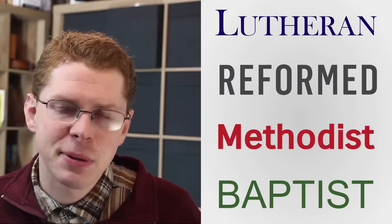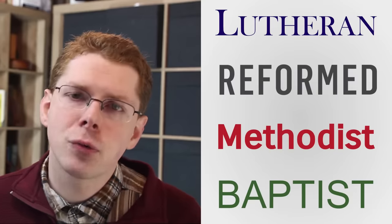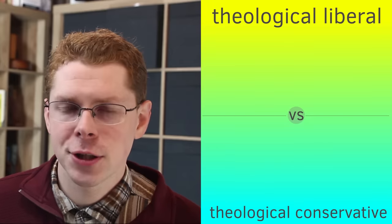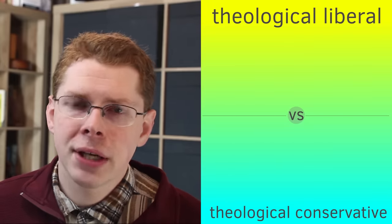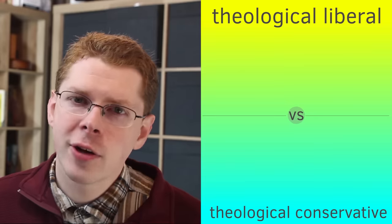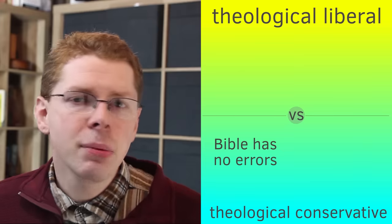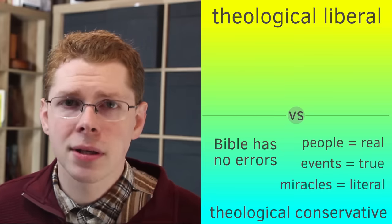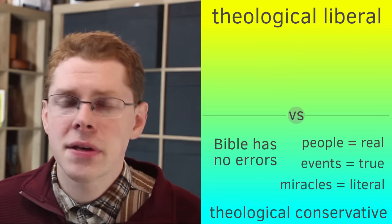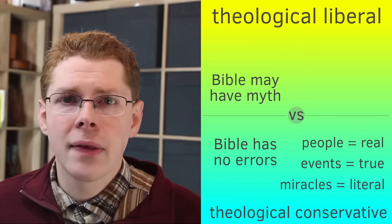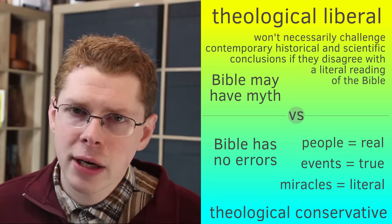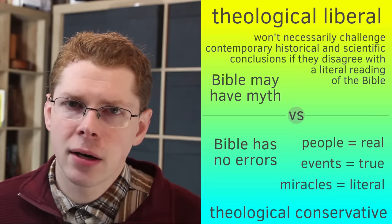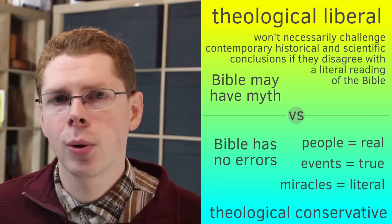Before discussing more differences, it's important to bring up what really makes this complicated: the distinction between Theological Liberalism and Theological Conservatism. Theological conservatives believe that the Bible has no errors in it — that the people mentioned in the Bible are literal people, and the events, including miracles, literally happened. Theological liberals are willing to entertain the idea that some events or people could be mythical, and they look to contemporary historians, biblical textual critics, and scientists for their views on the evidence. If those views contradict the Bible, they are content to say the Bible isn't literally true on those matters.